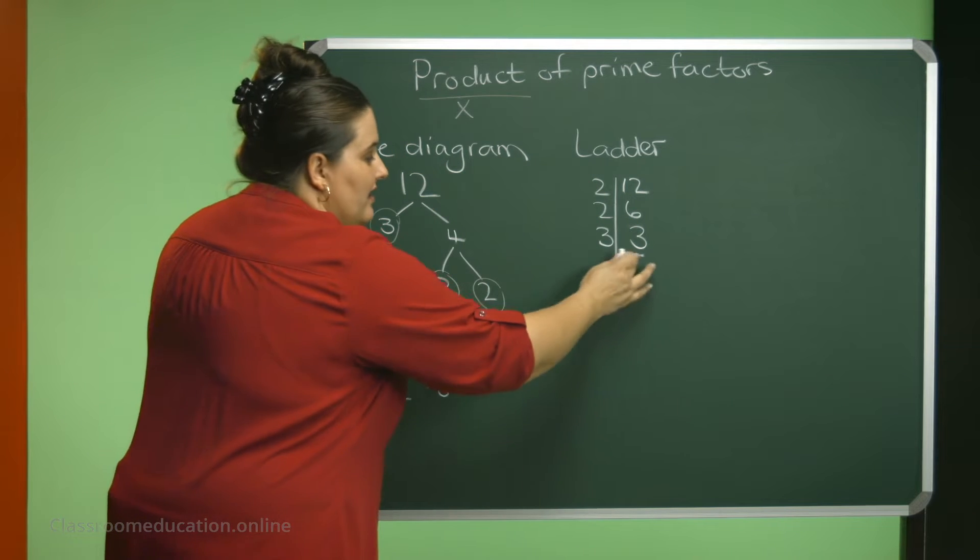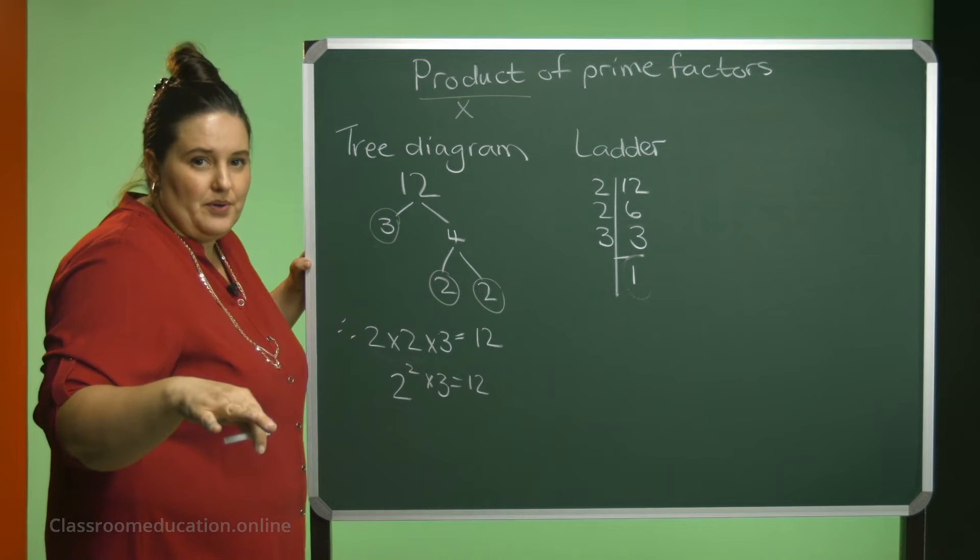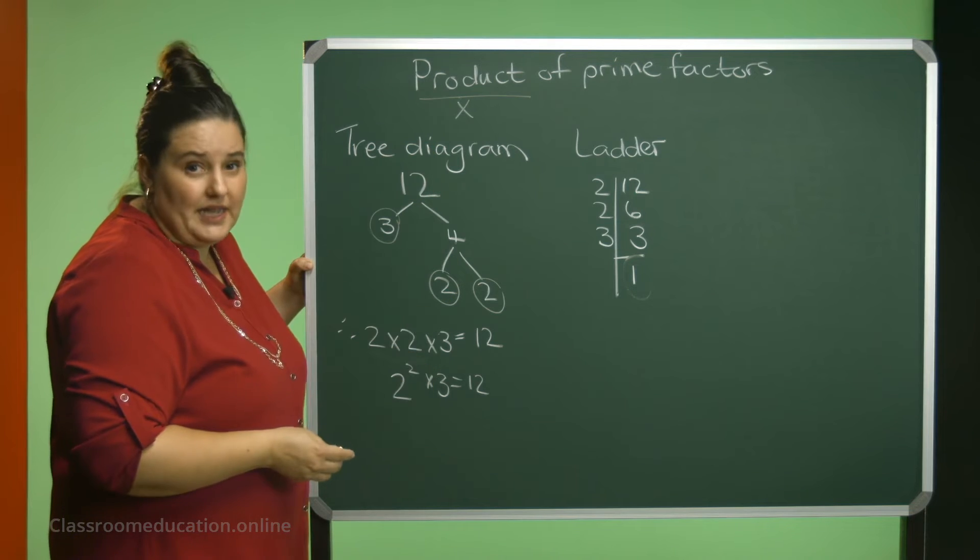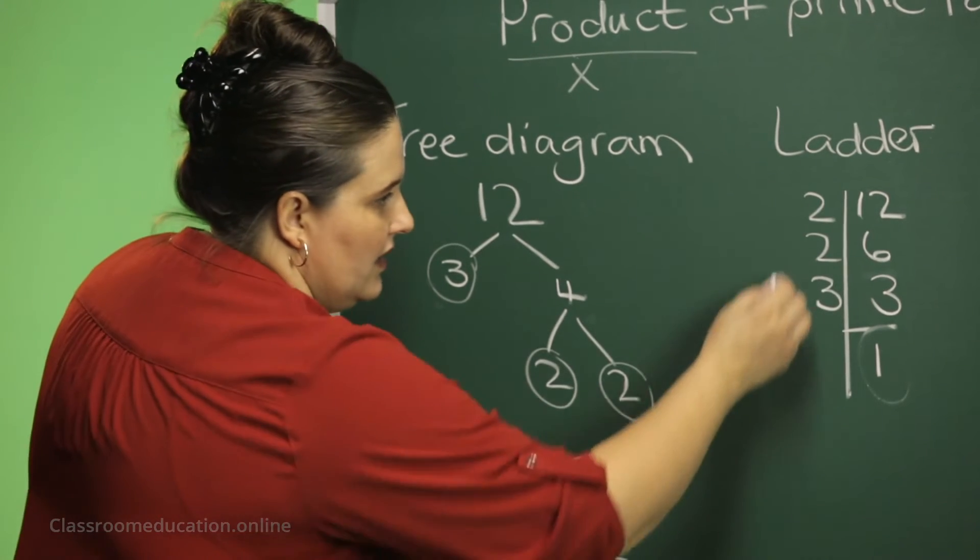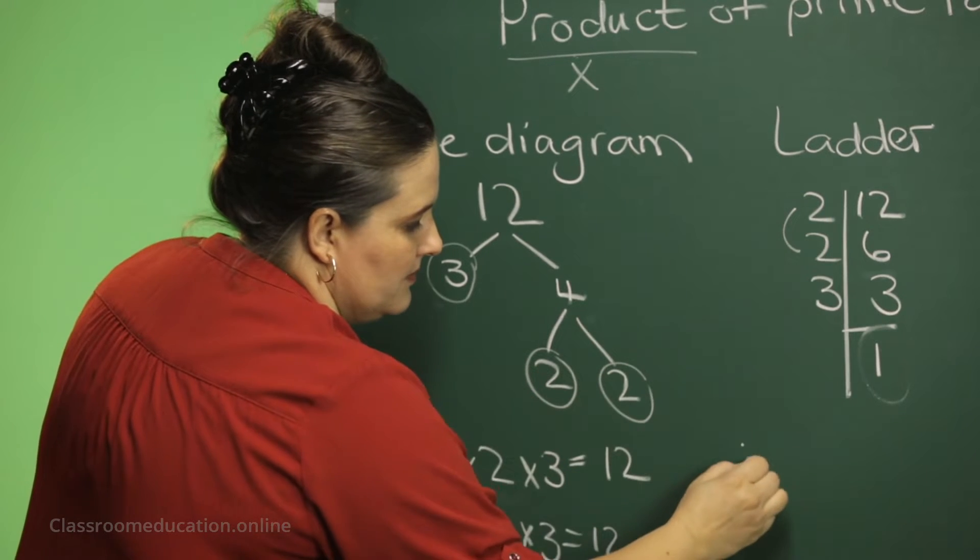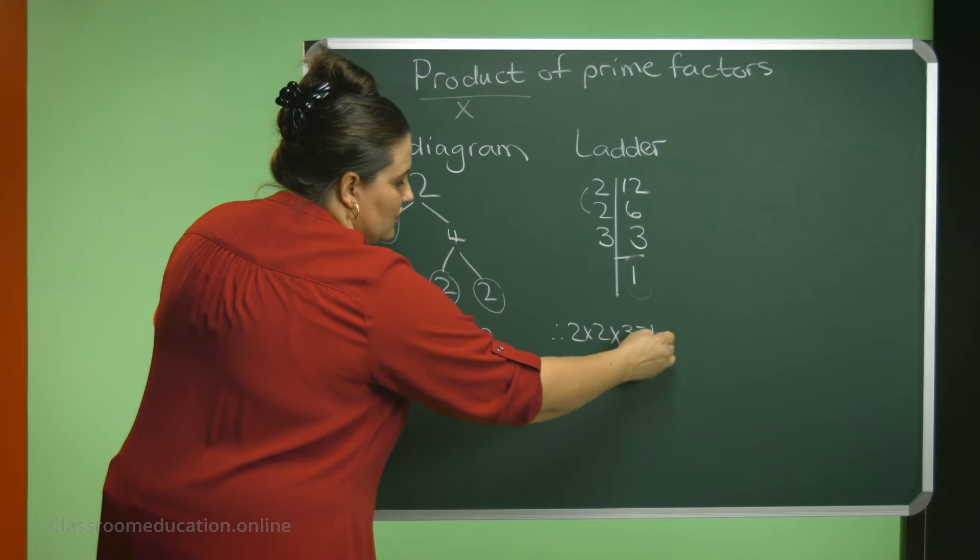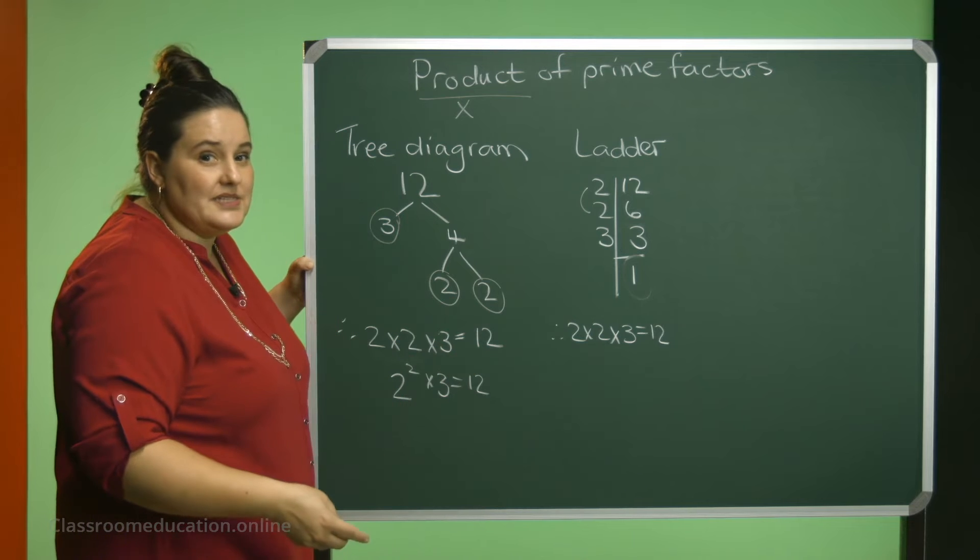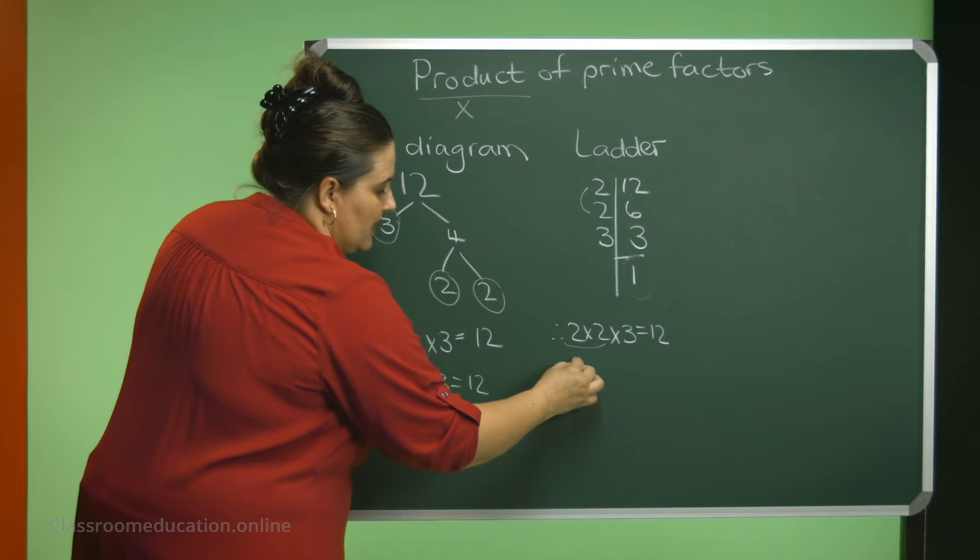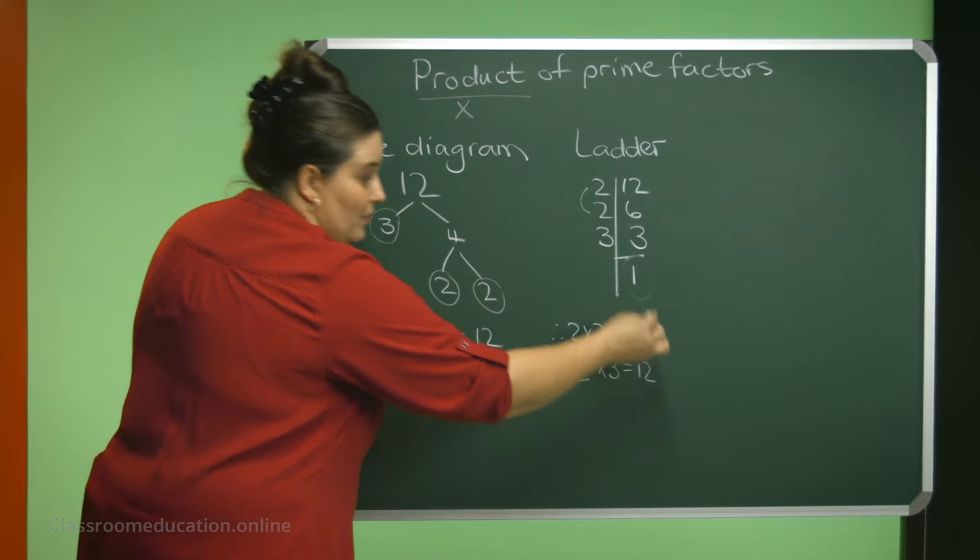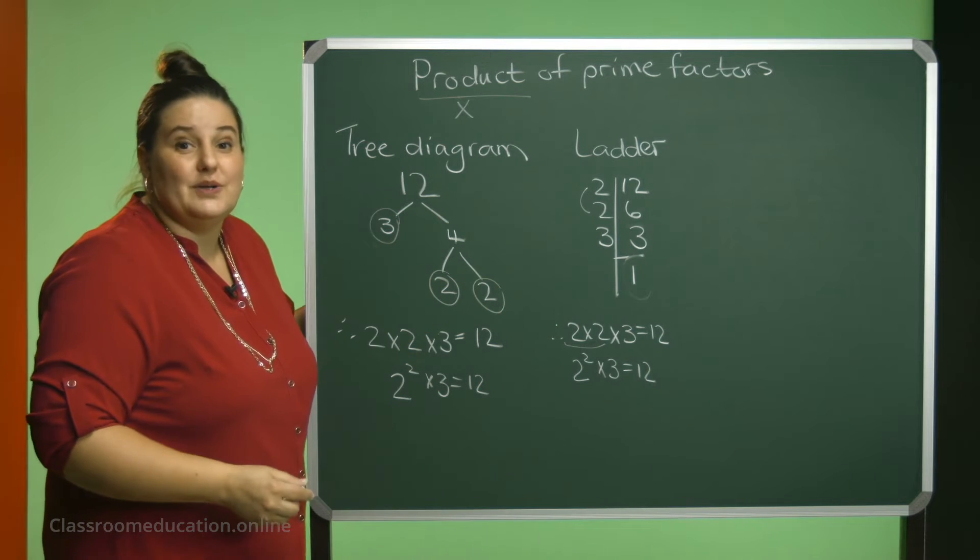And once you have a 1 there, you can stop. I would like now to write this in terms of a product of prime factors. I'm going to say 2 times 2 times 3 is 12. Again, you can say that 2 times 2 becomes 2 squared times 3, and that is 12. Let's do another example.